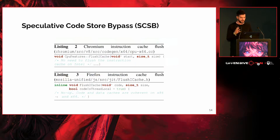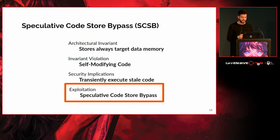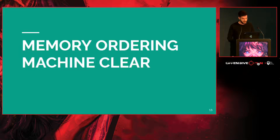The two main web browsers — Chromium and Firefox — when they JIT new code, are not doing any serializing operations, because they rely on the assumption that code and data are always kept coherent, which they are at the architectural level but not at the microarchitectural level. Speculative Code Store Bypass is somewhat similar to its architectural counterpart, a use-after-free attack — it allows an attacker to reference data that is no longer referenced.